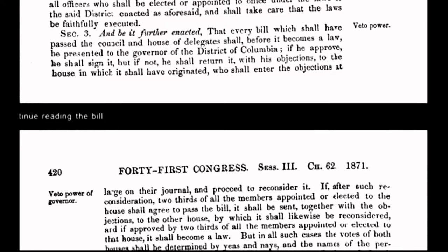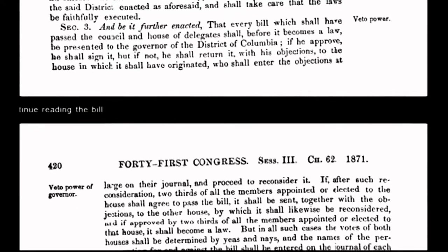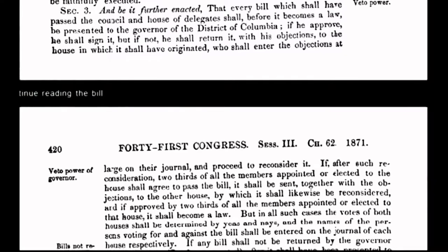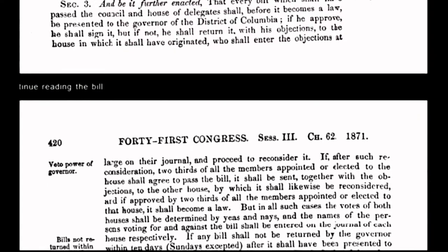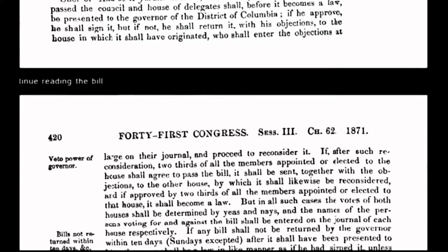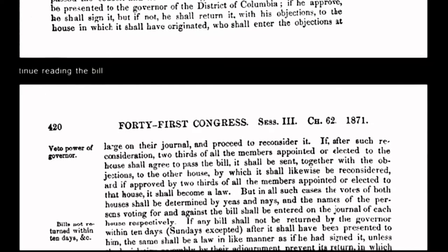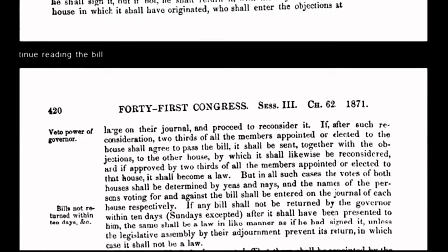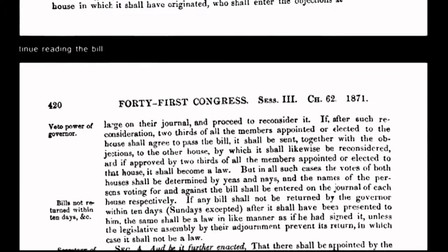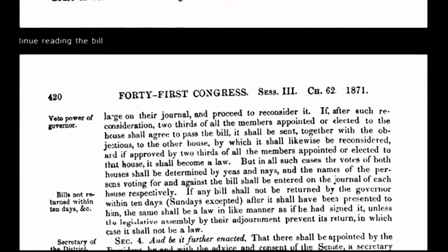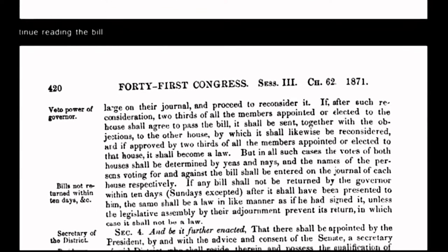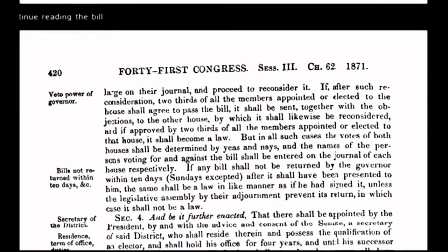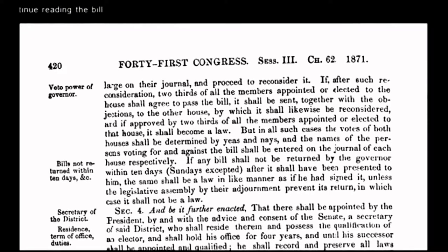Instead of having absolute and unalienable rights guaranteed under the organic constitution, we the people now have relative rights or privileges. One example is the sovereign's right to travel, which has now been transformed under corporate government policy into a privilege that requires citizens to be licensed. An example would be passports. By passing the Act of 1871, Congress committed treason against the people who were sovereign under the grants and decrees of the Declaration of Independence and the organic constitution.